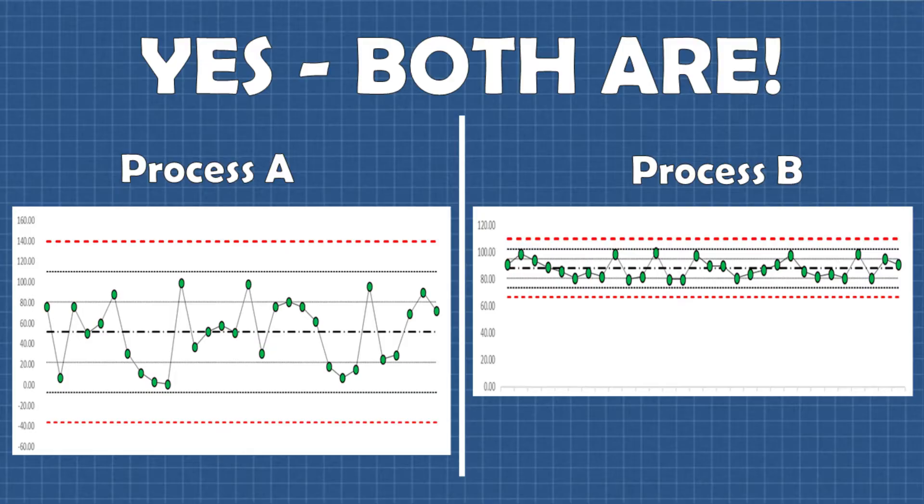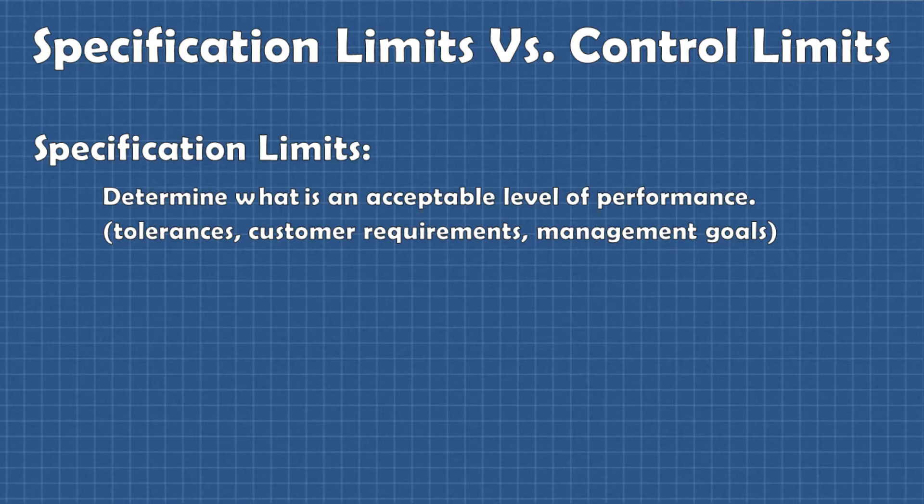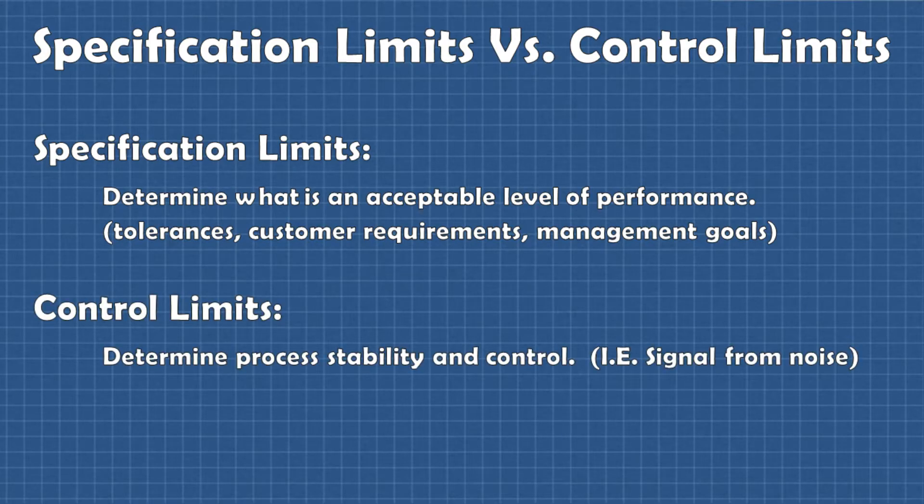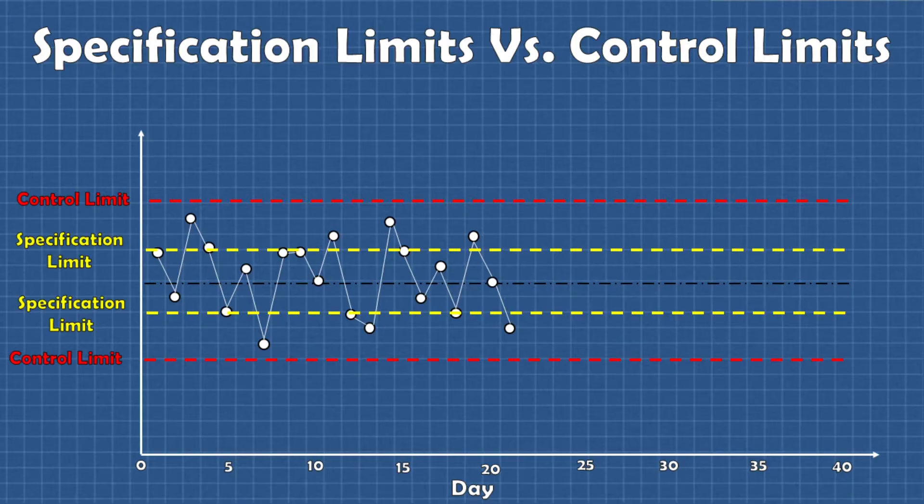And this is a good segue into my last point about control charts which is that control charts by themselves tell us nothing about the performance of a process. It is common to mistake control limits for specification limits. Specification limits tell us what is acceptable whereas control limits determine process control. You can easily have a process that is out of control and still meeting specifications and conversely you can have a process that is in control and not meeting specifications.